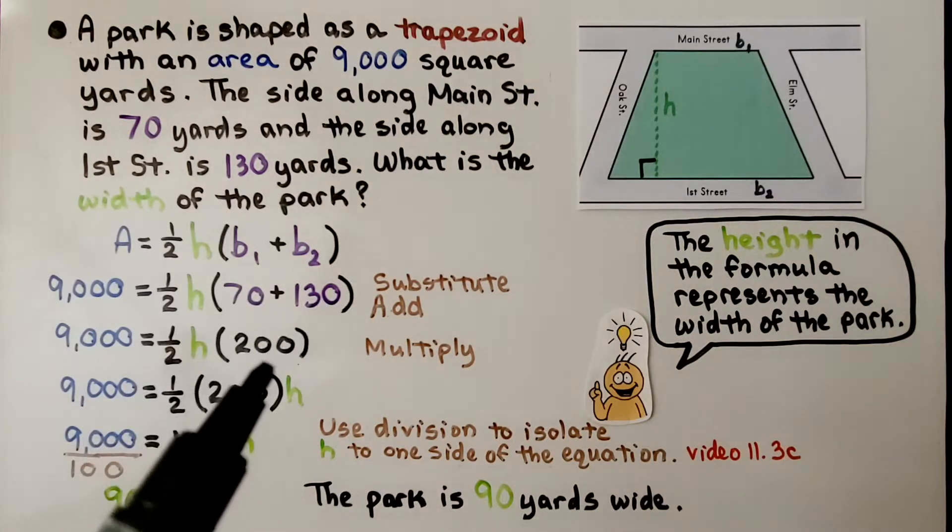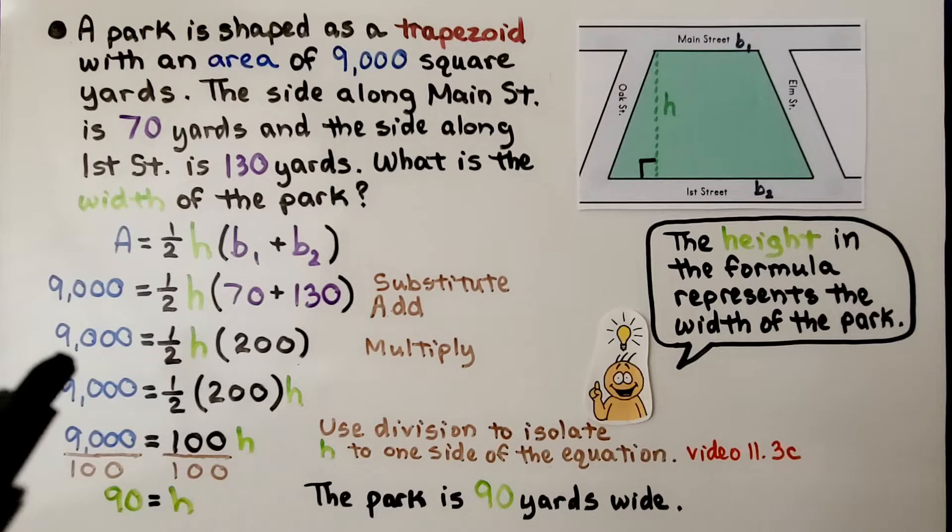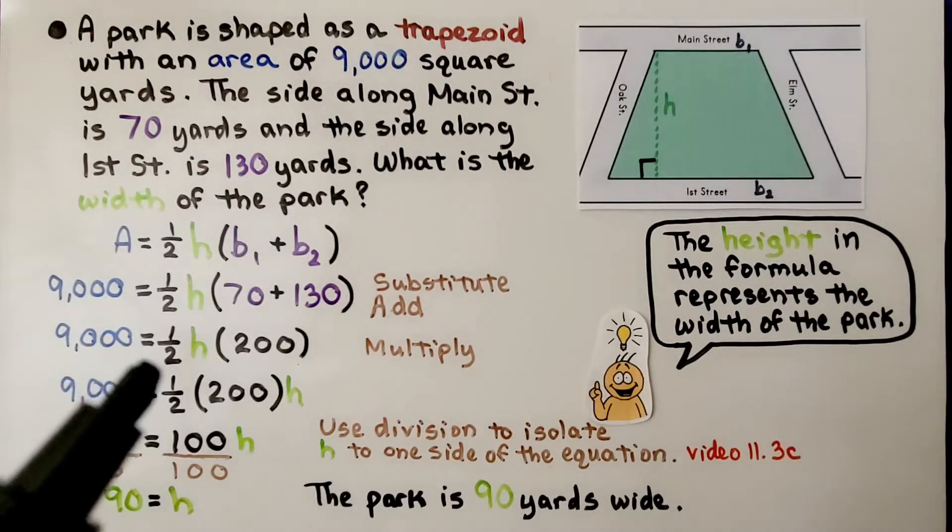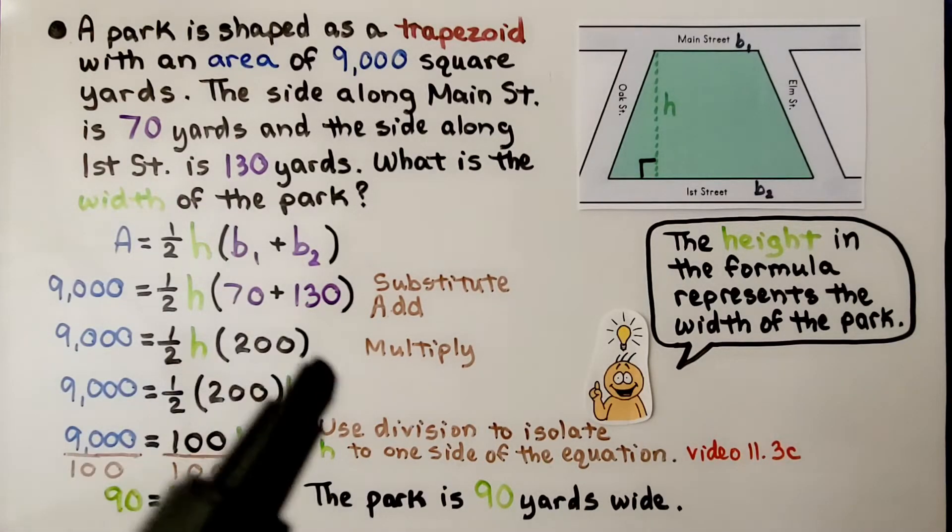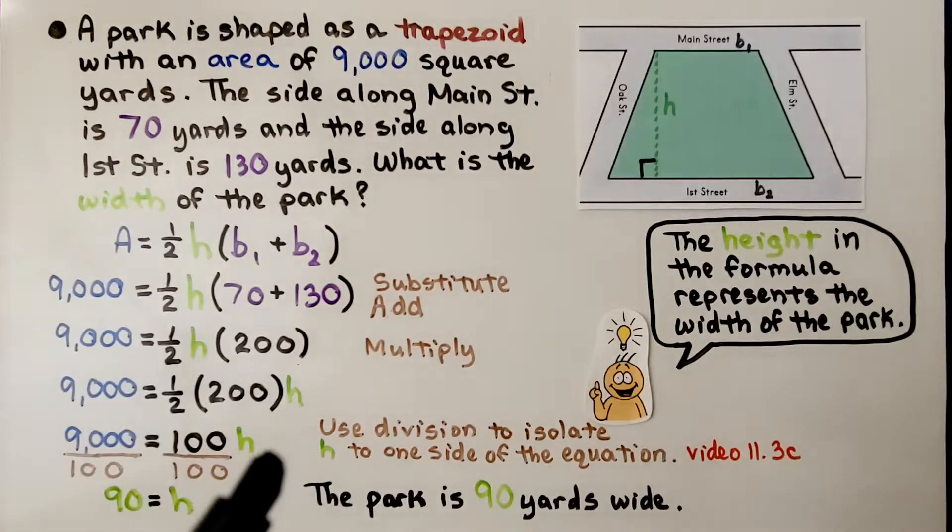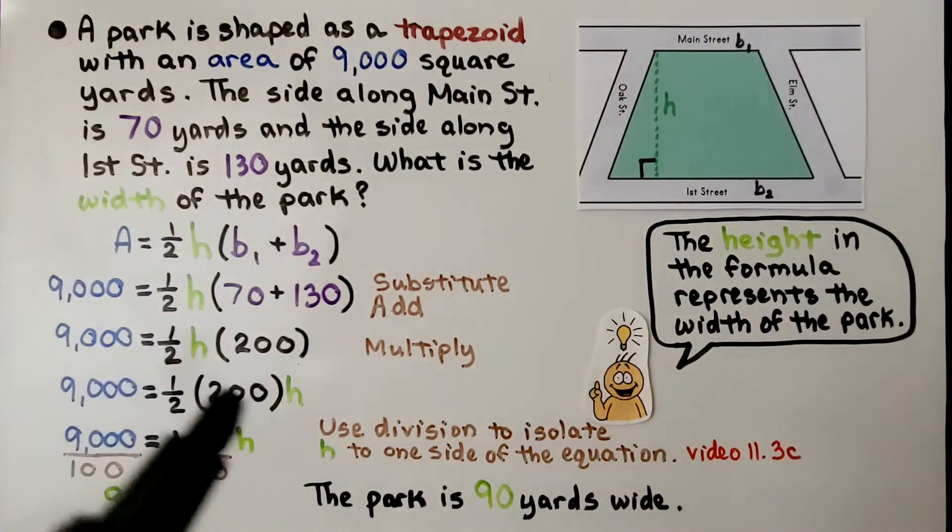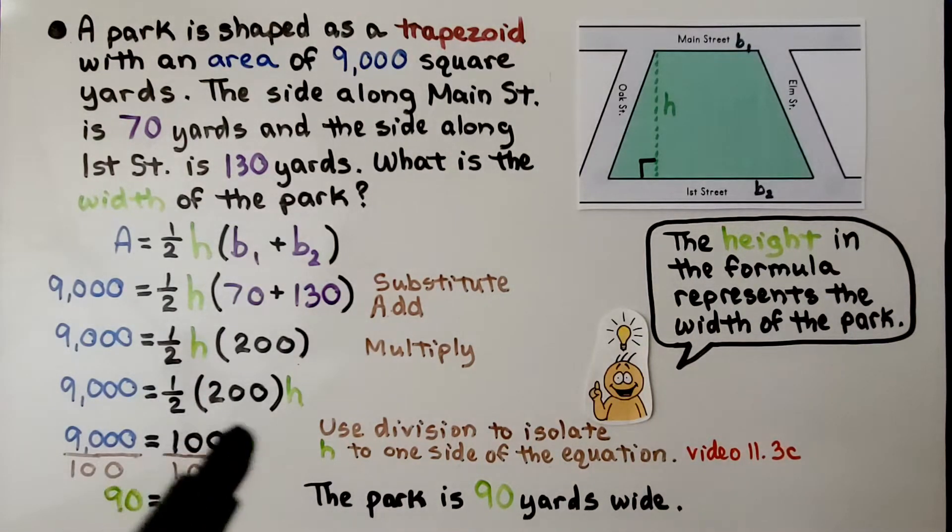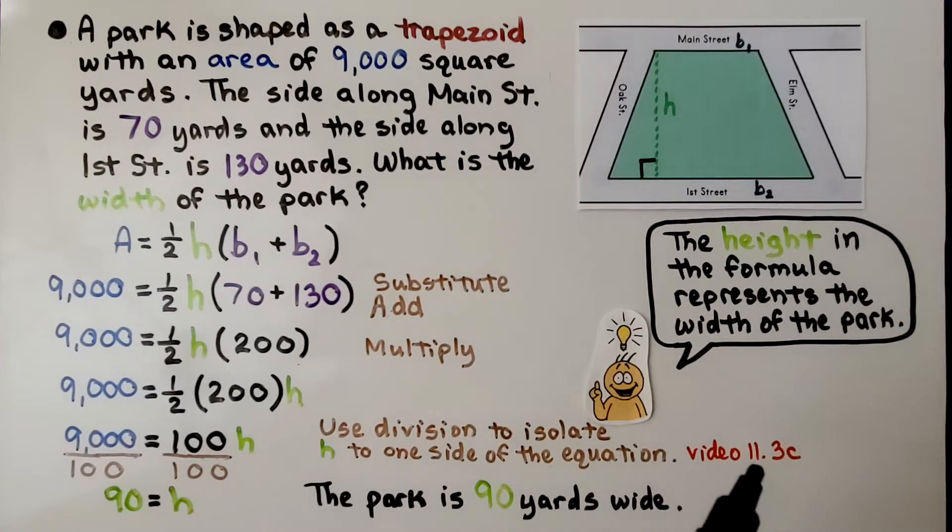We add these together and get 200. Half times 200 is 100, so we have 100h. We can use division to isolate h to one side of the equation. We divide both sides by 100, this coefficient, and that's going to create a 1.